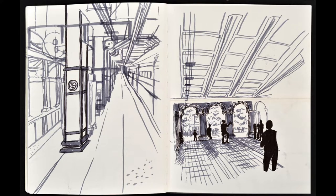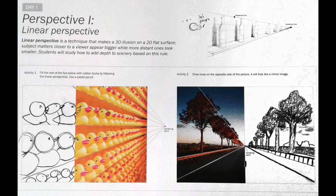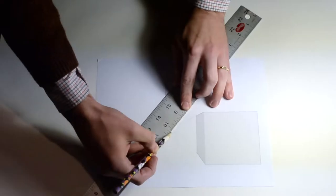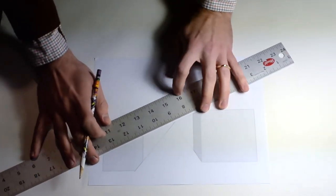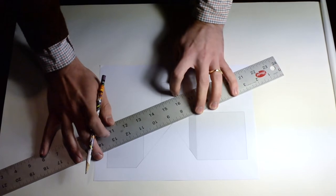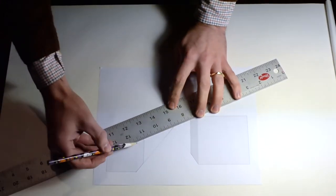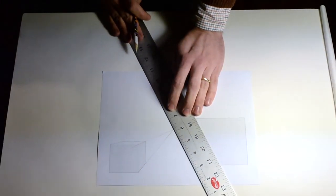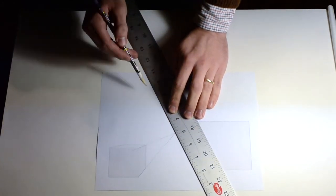Perspective in art refers to the representation of three-dimensional objects or spaces in two-dimensional artworks. Artists use perspective techniques to create a realistic impression of depth. If you look down a straight road, the edges of the road look as if they're coming closer together in the distance. Parallel lines move together as they recede away from you. This is called linear perspective.